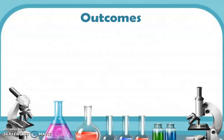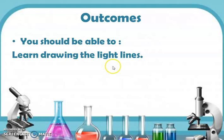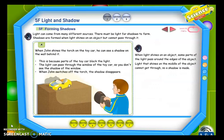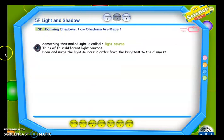Our outcomes today: you should be able to learn drawing the light lines and describing how the shadows change. Now, my students, you need to open your book, page 68. Our lesson is lesson number 2, 5F — Forming Shadows: How Shadows Are Made. إذن درسنا لليوم هو تشكيل الظلال — How Shadows Are Made.